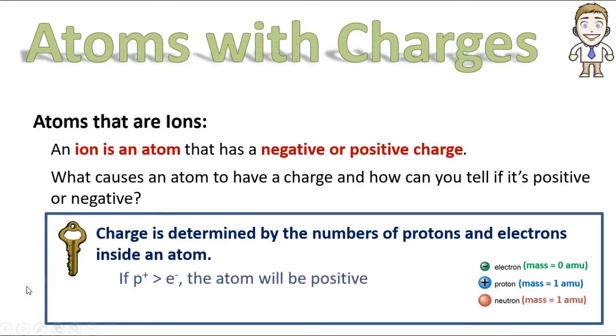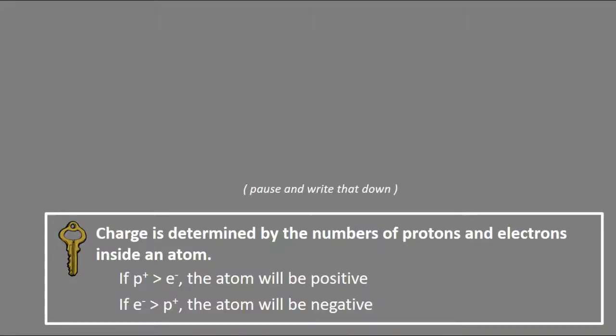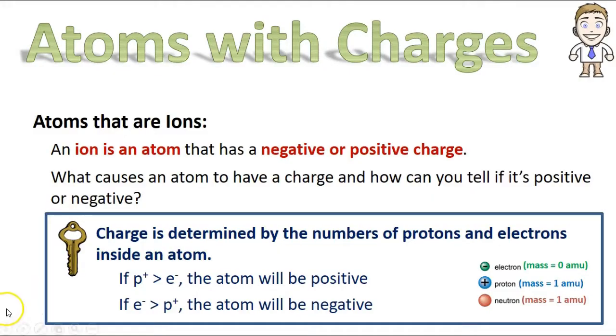In a little more detail, we could say that if there are more protons than electrons, if there's more positives than negatives, the atom will be a positive. And if there's more electrons than protons, the atom will of course be a negative ion.